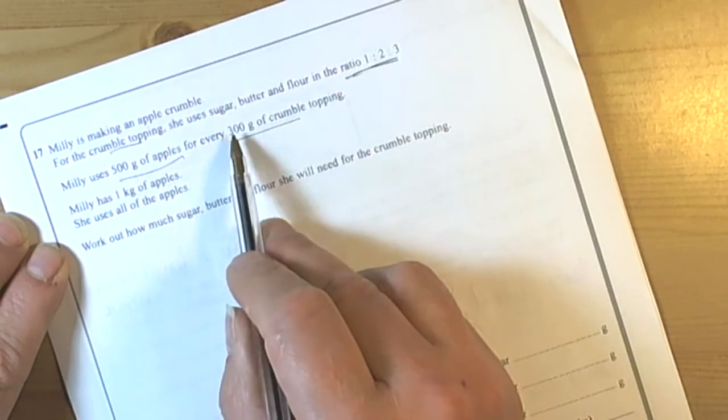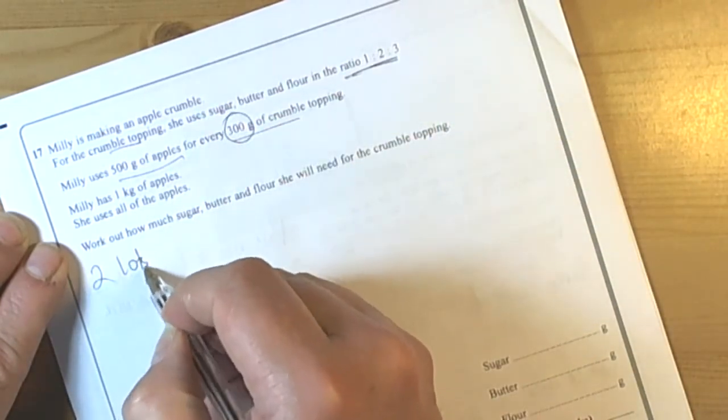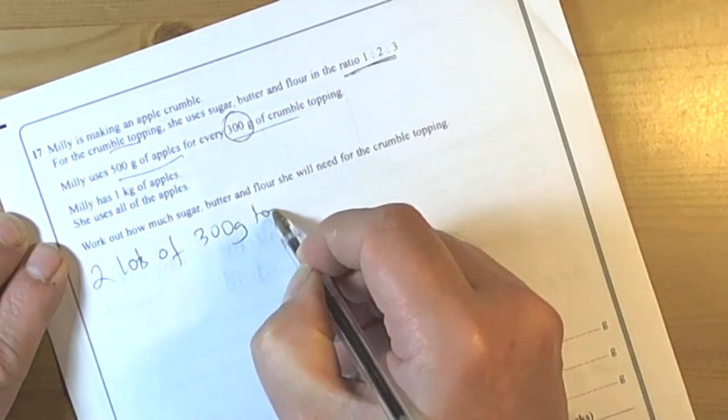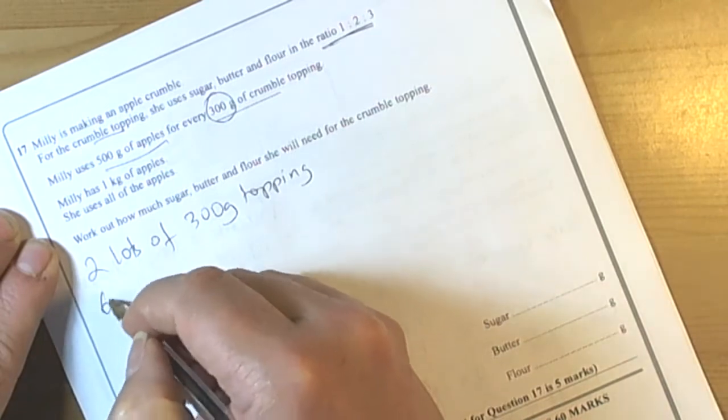we've got a kilogram, then we're going to need twice this amount, so we're going to need two lots of the 300 gram topping. Now they're telling us, so that means we need 600 grams of topping.